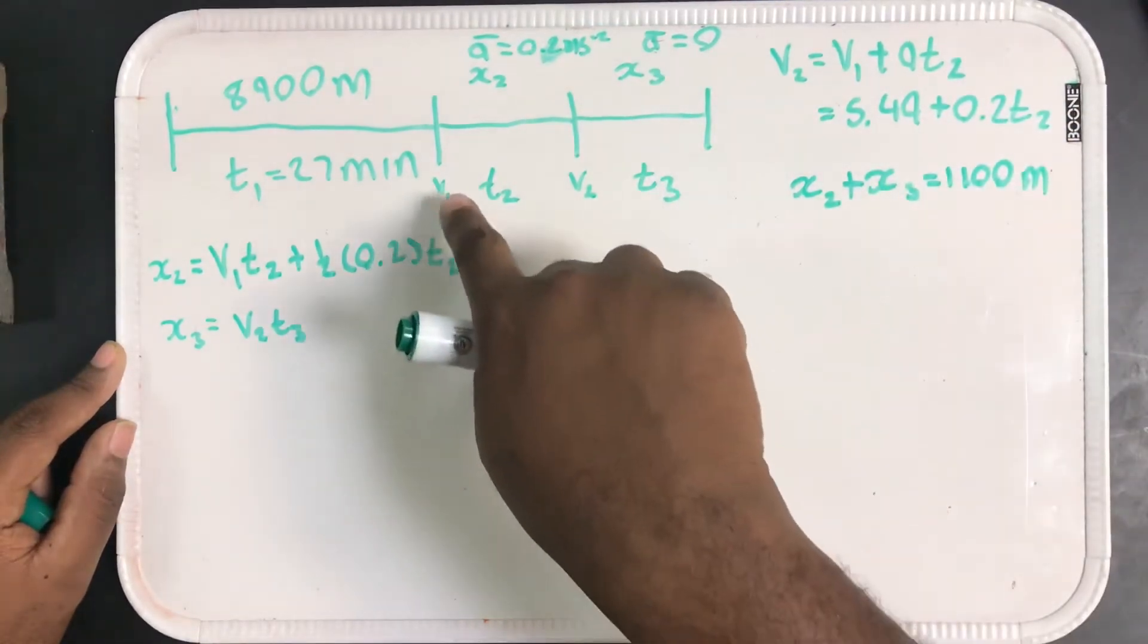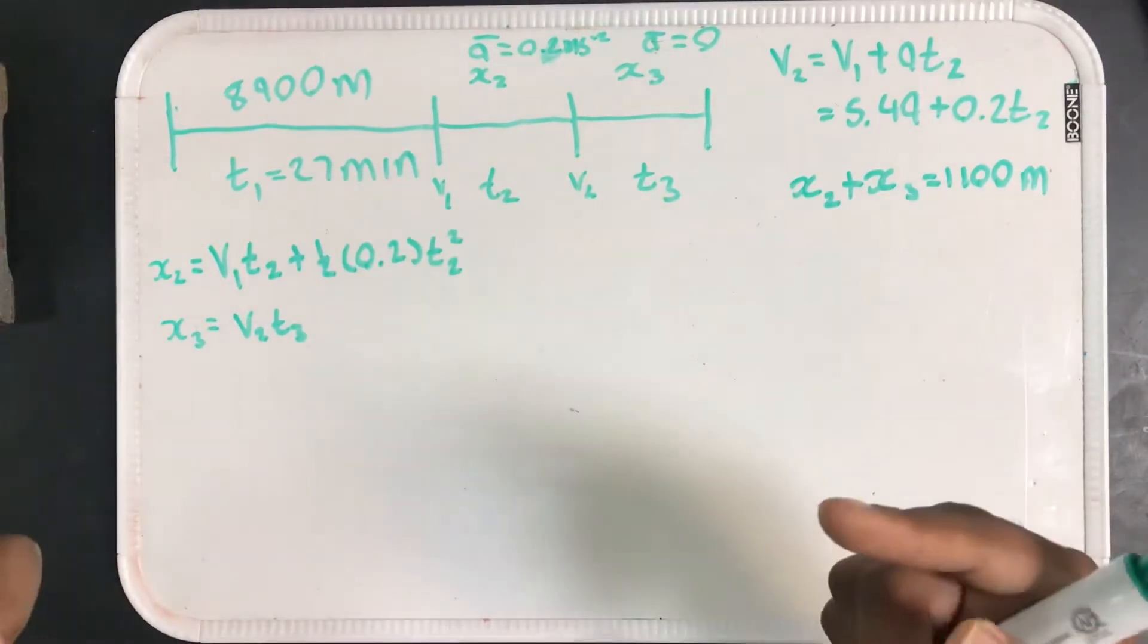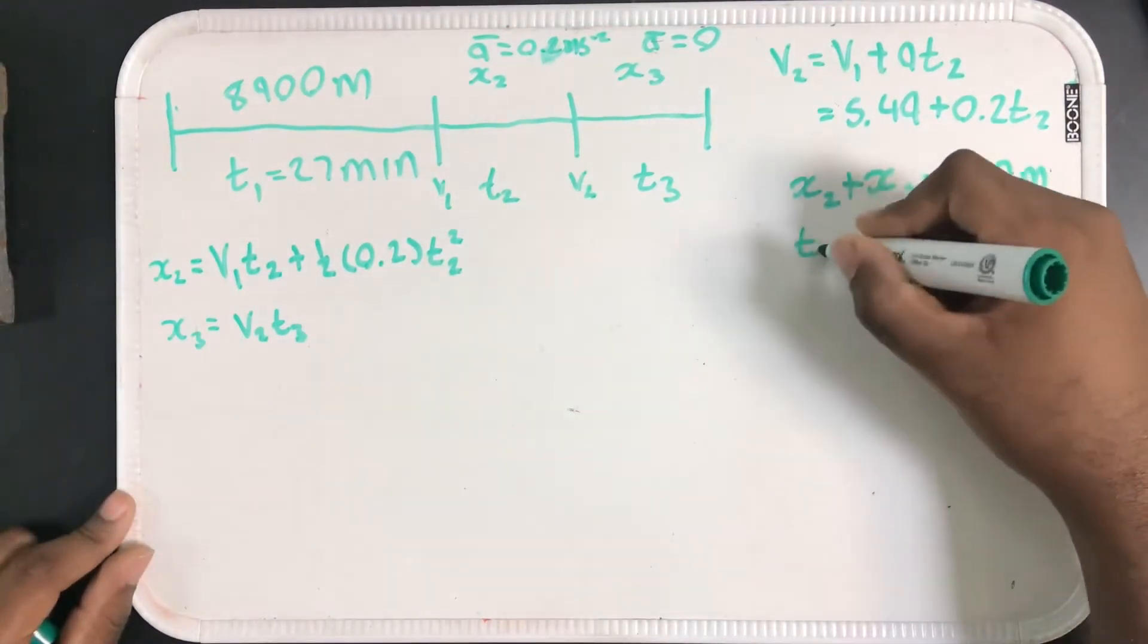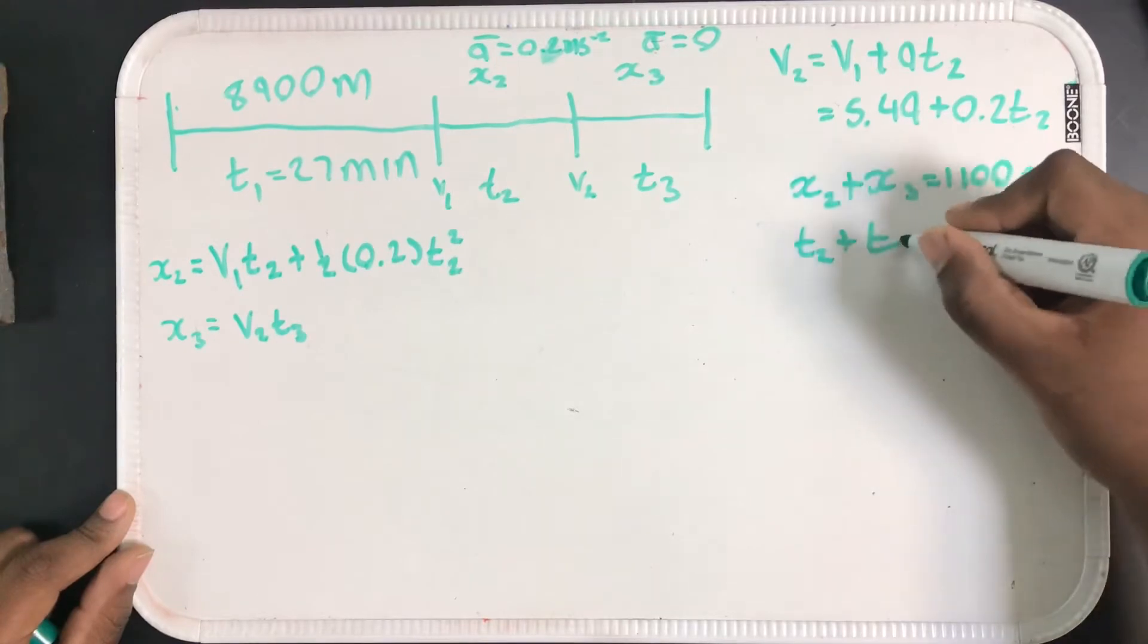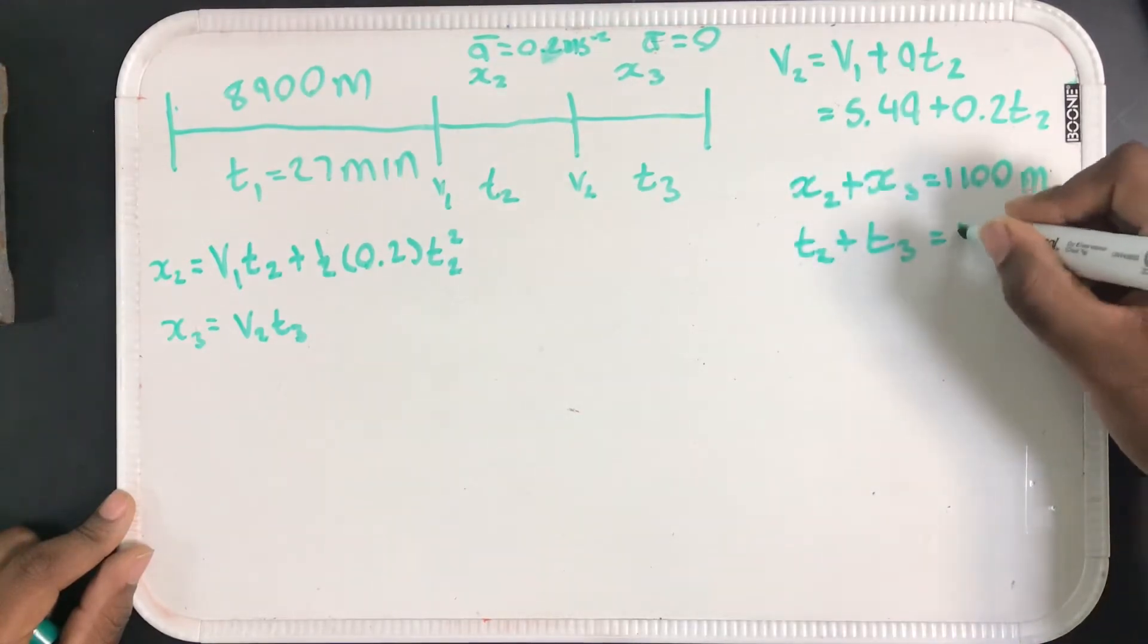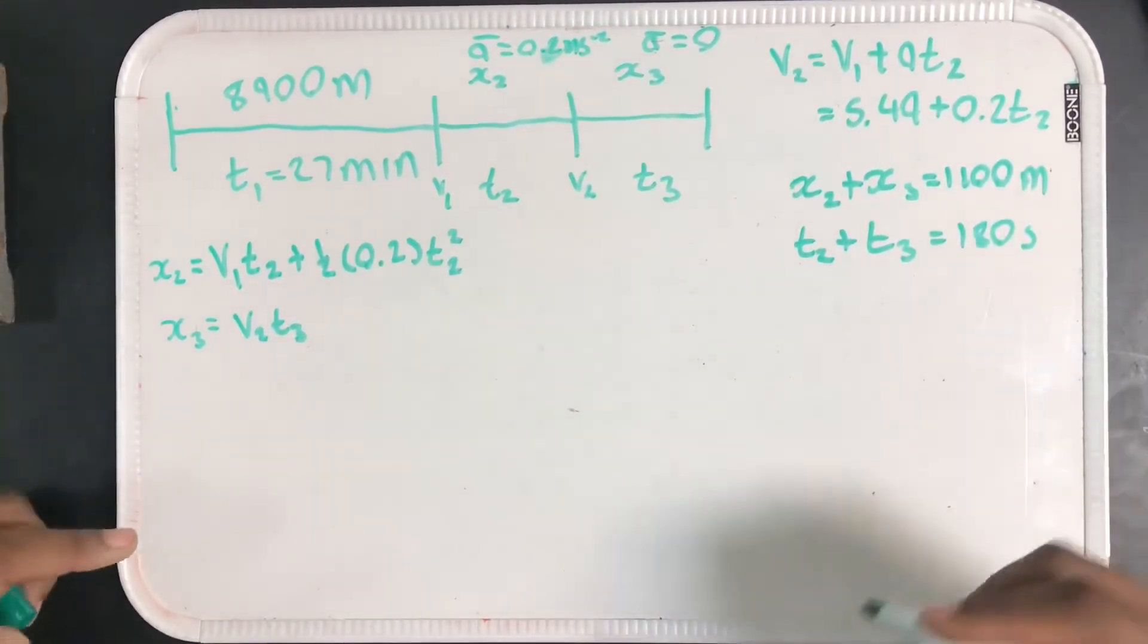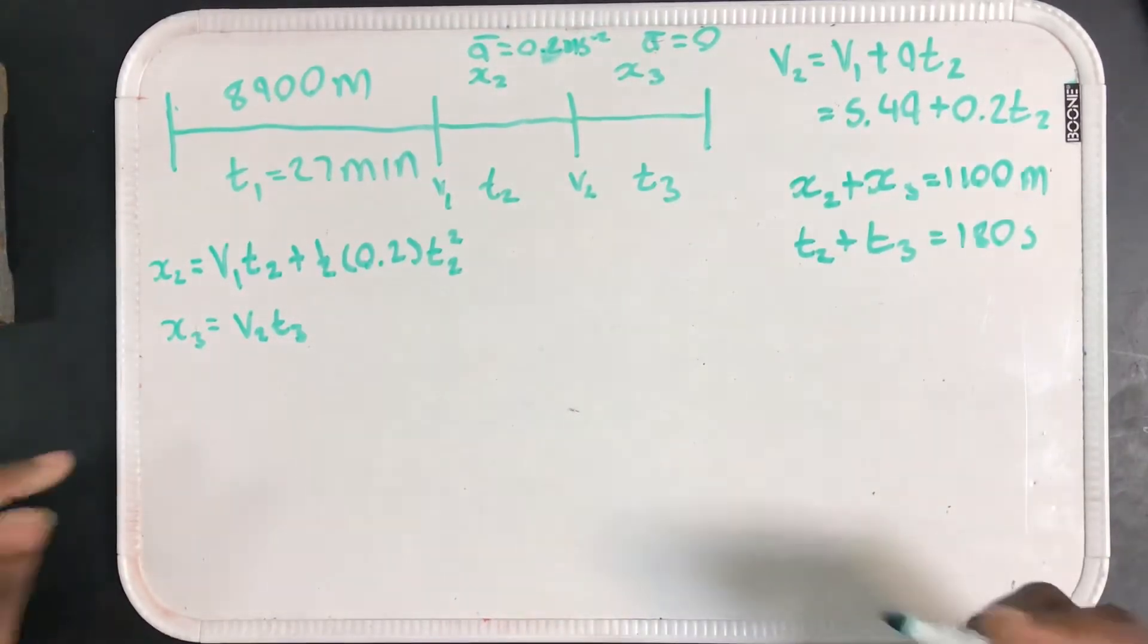Also, this time here and this time here, they said after 27 minutes, meaning that there is 30 minus 27 minutes left, which is 3 minutes. So T2 plus T3 should add up to 180 seconds, or 3 minutes.